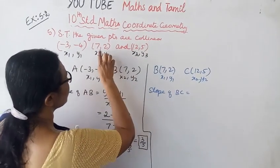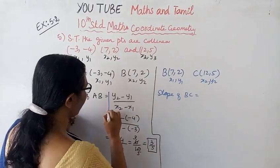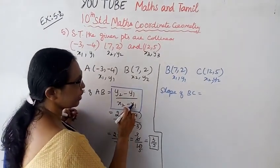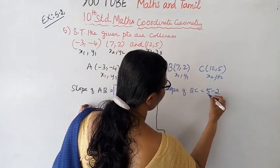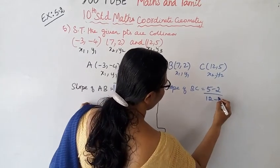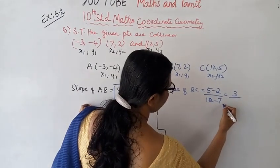Now for slope of BC, B is (7, 2) and C is (12, 5). Using the same formula: y2 minus y1 by x2 minus x1. That's 5 minus 2 by 12 minus 7. Therefore, 5 minus 2 is 3, 12 minus 7 is 5, giving us 3 by 5.